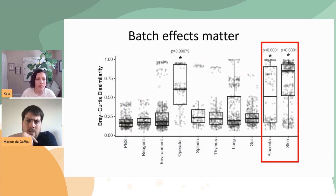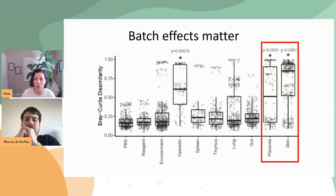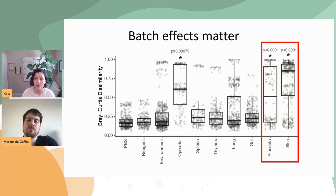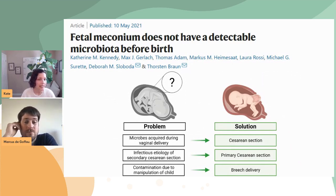When we take that batch out, the difference in gut samples from PBS samples disappears — those gut samples are now not different from PBS negative controls. However, the placental samples and skin samples are still different, and we think this is again because of sampling contamination from the vaginal microbiome.